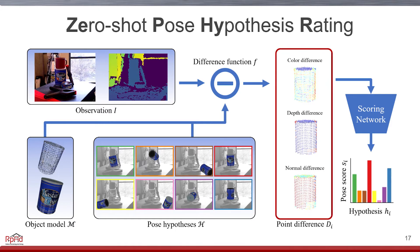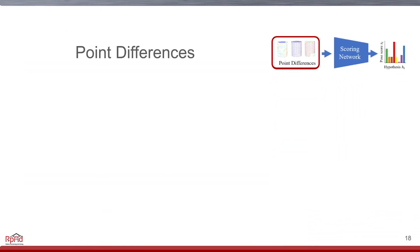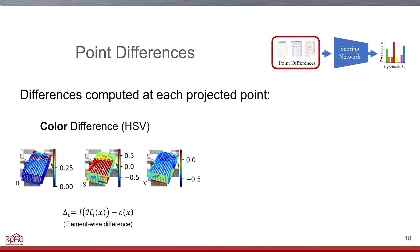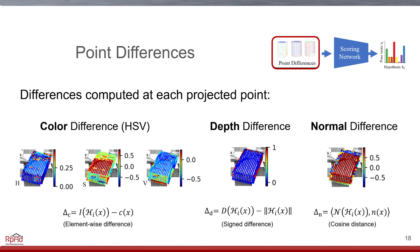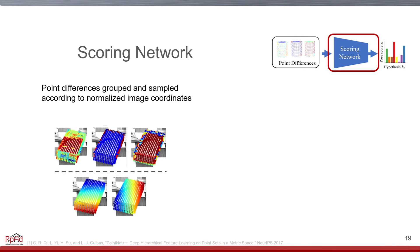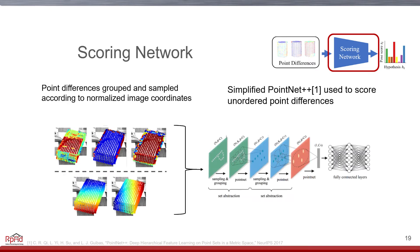The core of our method is based on point differences. These represent different dimensions across which our hypothesis can differ from the observation. Using the projected model points, we compare the color difference in the HSV color space. For geometry, we use the difference in the projected depths, and the cosine angle between the observed and projected surface normals. These features are then passed to our score network. We use normalized image coordinates to define the local neighborhoods, and a simplified PointNet++ to map from differences to a final fitness score of the pose hypothesis.